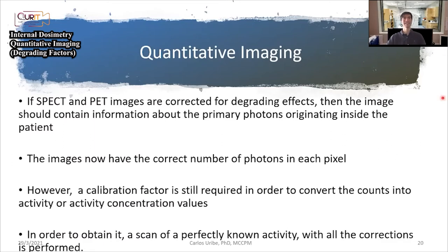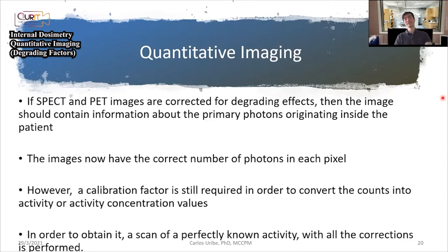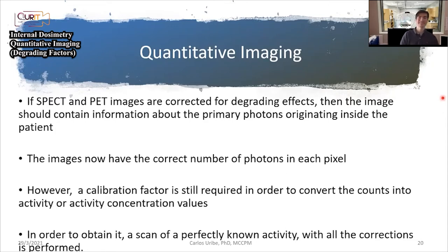In quantitative imaging, we want to correct for all those degrading effects. If we do, then our image contains all the information about the primary photons originating from the radioactive source in the patient — meaning we can know how many particles are actually coming from that source. When we draw an ROI, the images now have the correct number of photons in each pixel. However, these systems measure counts, so we still need a calibration factor that converts counts to our quantity of interest.